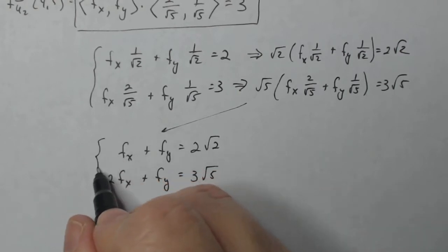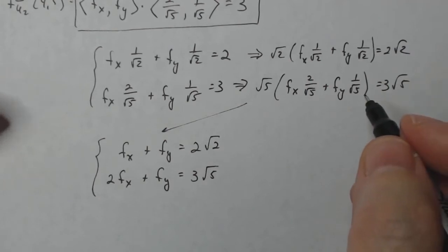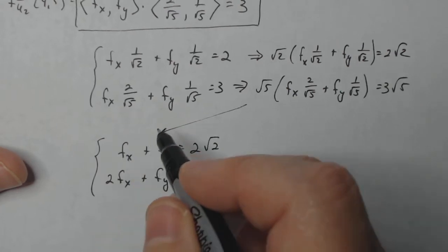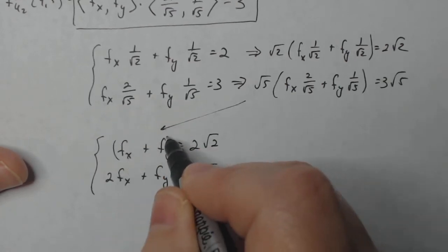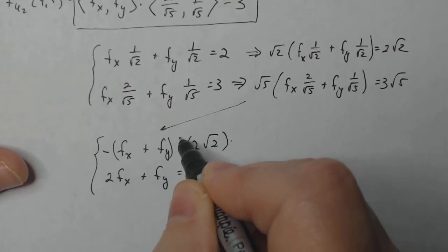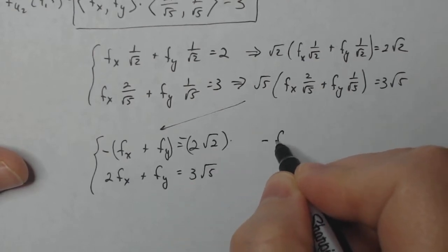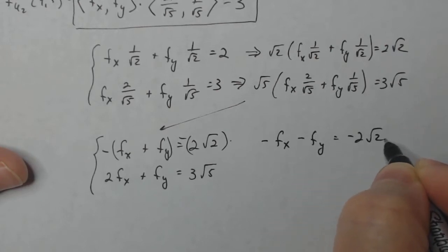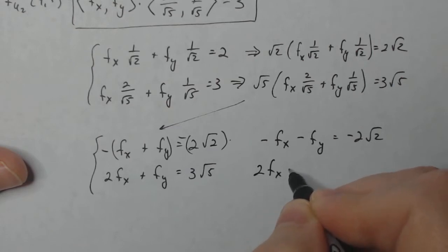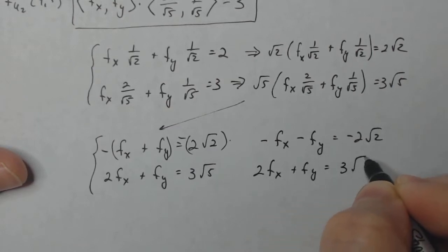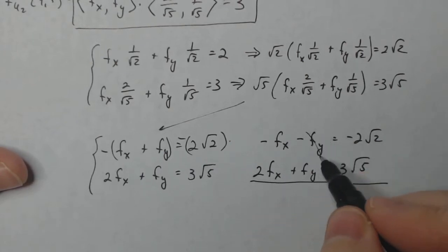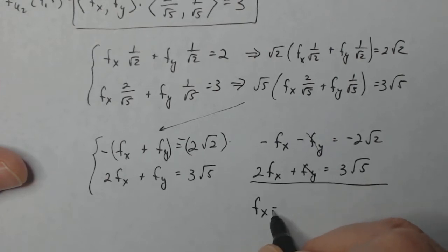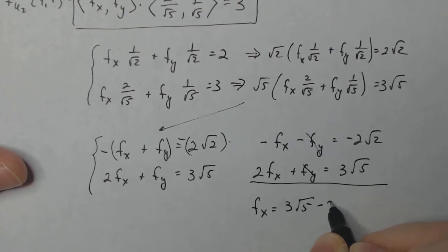Here's my system. These are all linear — to the power of one. I multiply the top equation by negative one and add the two equations to eliminate F_y. So: negative F_x minus F_y equals negative 2√2, plus 2F_x plus F_y equals 3√5. Adding those together, F_x equals 3√5 minus 2√2. There's nothing to simplify — just leave it.